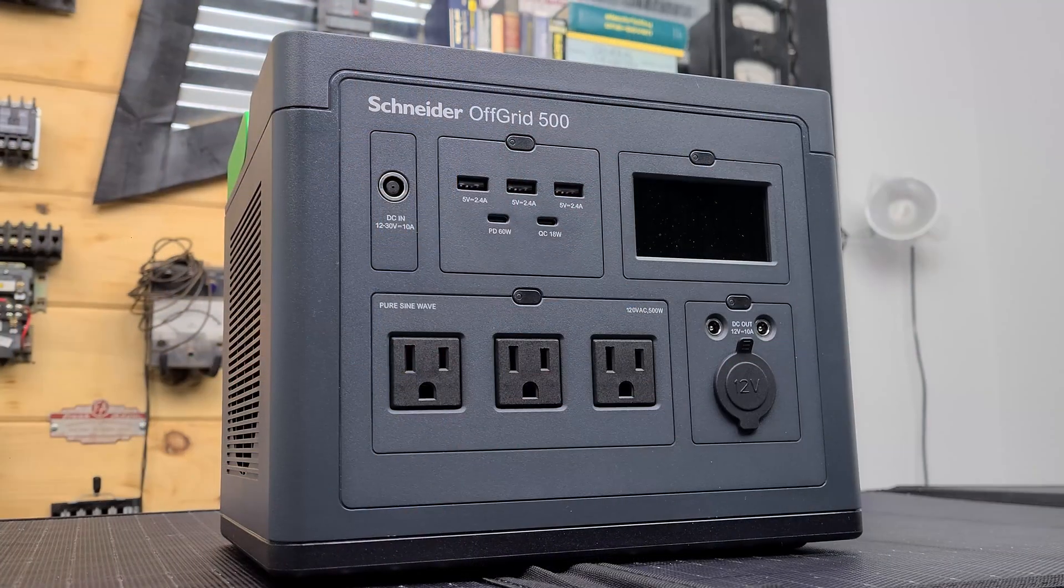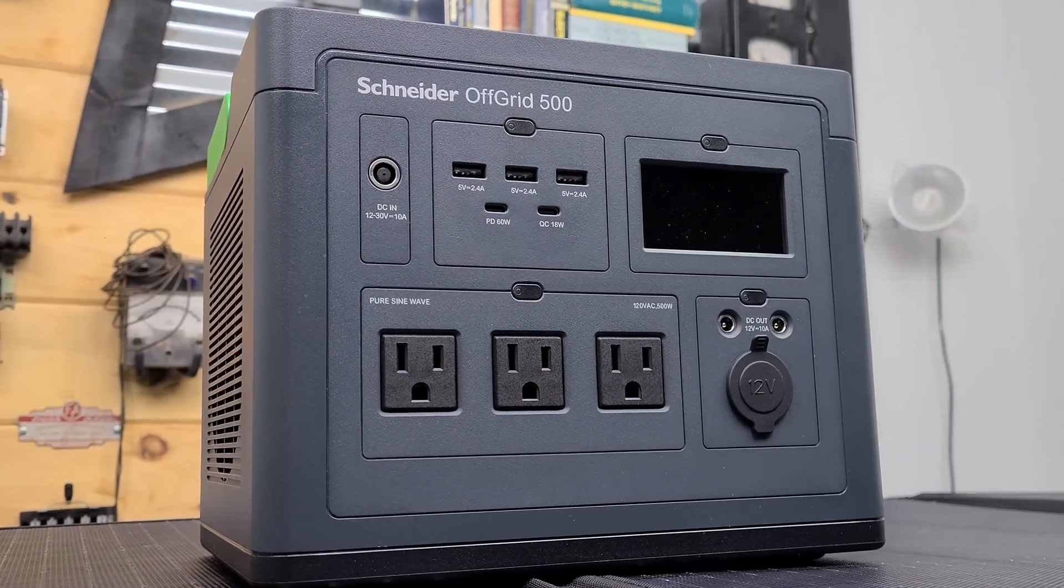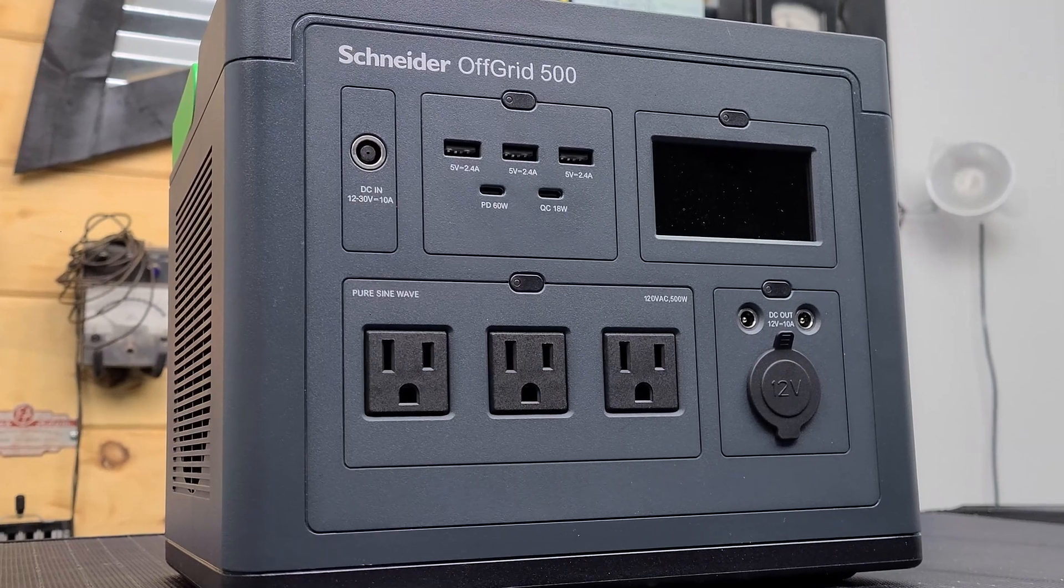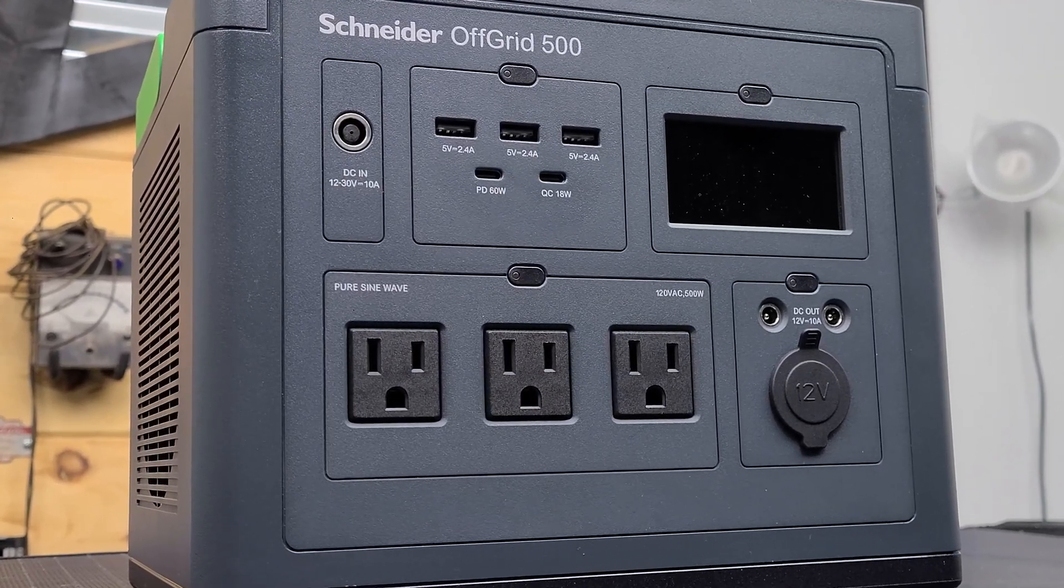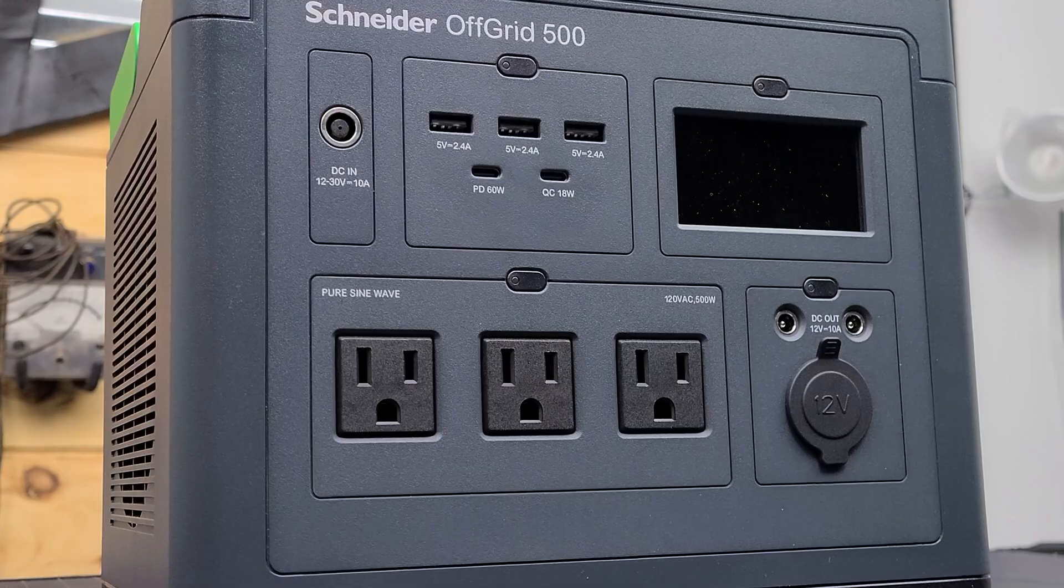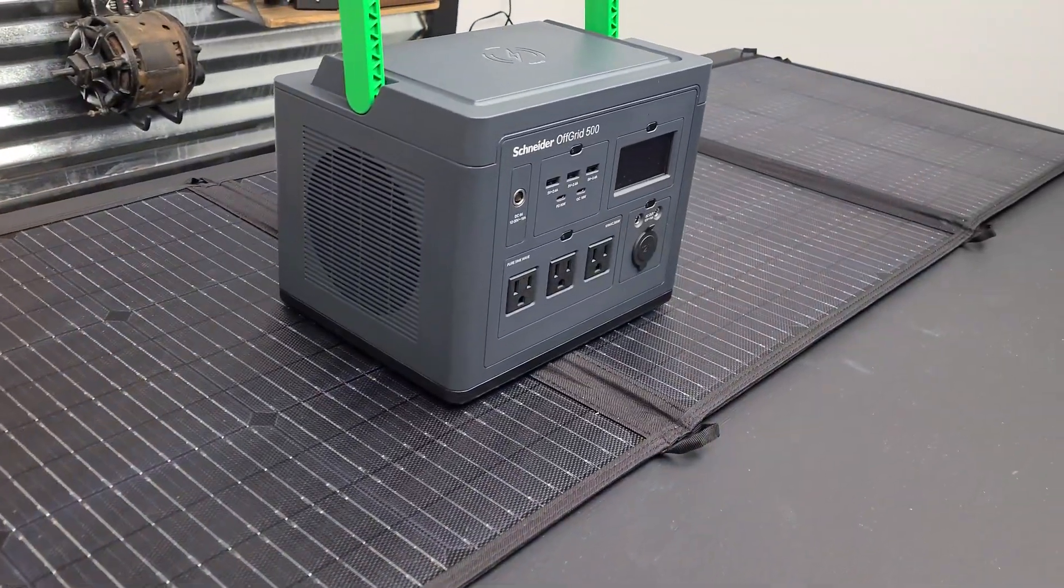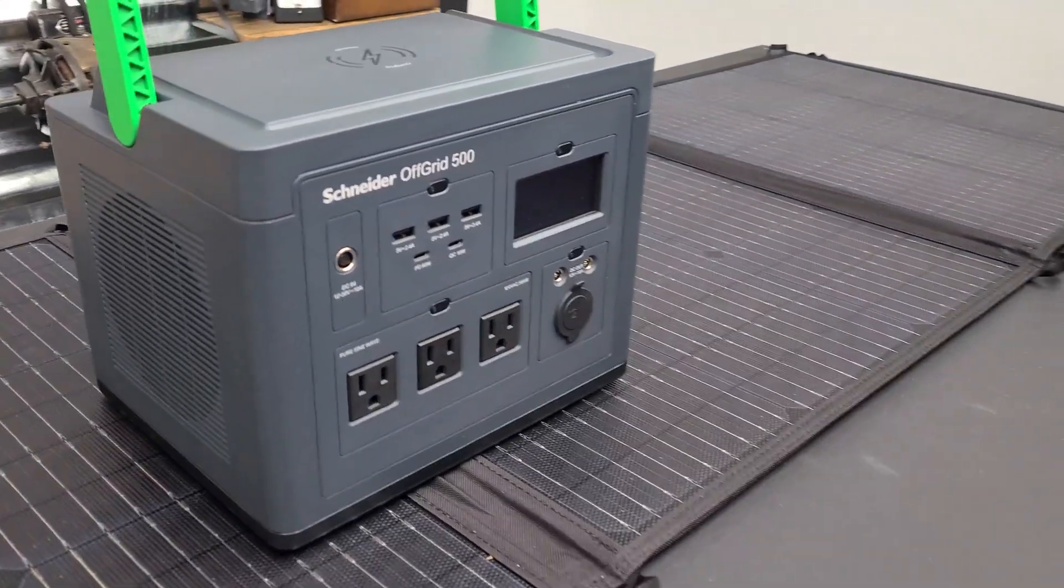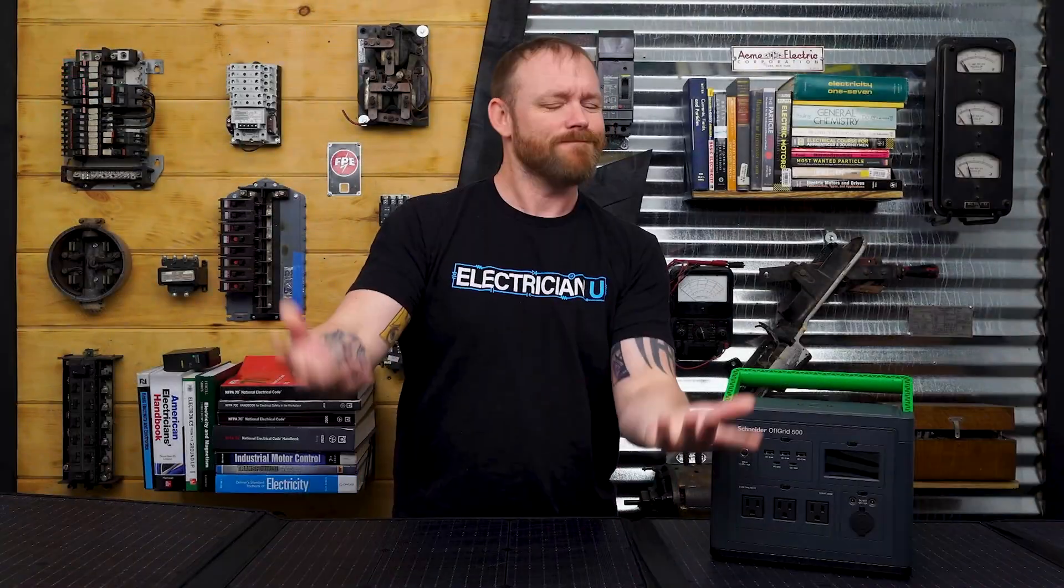How does something like this take direct current DC and change it into alternating current AC for devices to get plugged in? And similarly, how does solar get inverted into DC at homes? Let's talk about it.